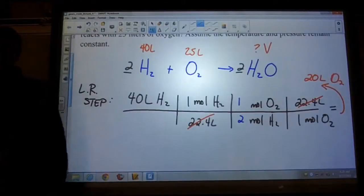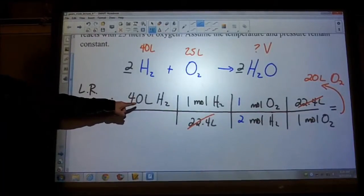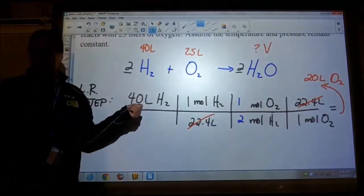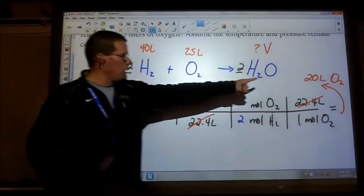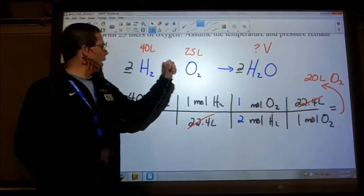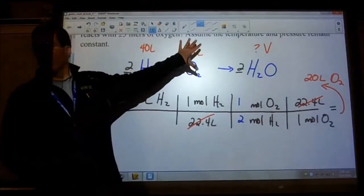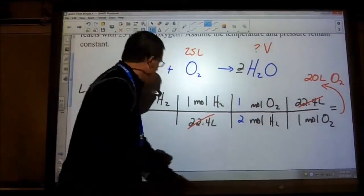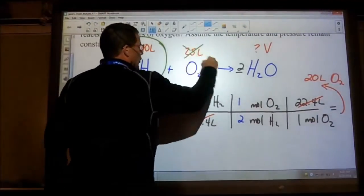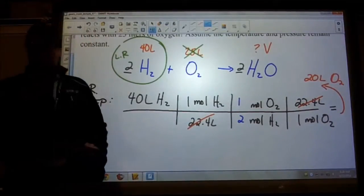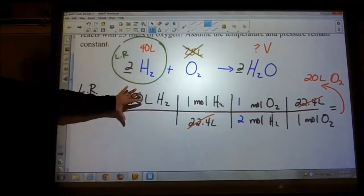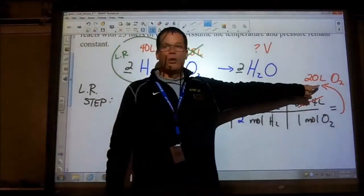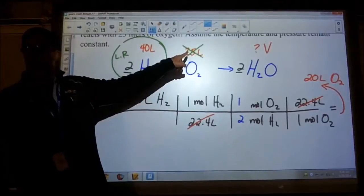Here's how you find out who the limiting reactant is. Talk yourself through it: if I used all 40 liters of hydrogen, I'm going to need at least 20 liters of oxygen to completely react. How much oxygen do I have? I have 25 — more than what I need. So I'm going to use all the hydrogen and have leftover oxygen. Who am I going to run out of first? Hydrogen. So hydrogen is our limiting reactant. I'll use all 40 liters of hydrogen and only 20 liters of the oxygen, leaving 5 liters left over.